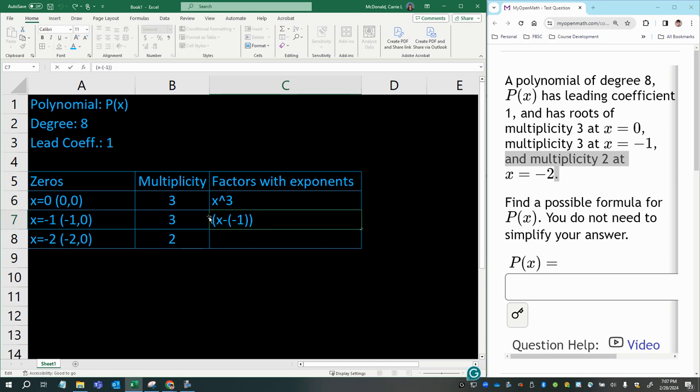And then this one is going to be double negative becomes a positive. So notice that if we plugged negative one right here in place of x, then we would have negative one plus one, which is zero. And this has a multiplicity of three. So this would be to the power of three as well.